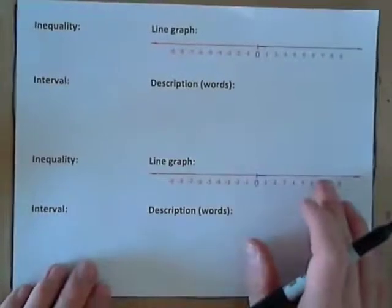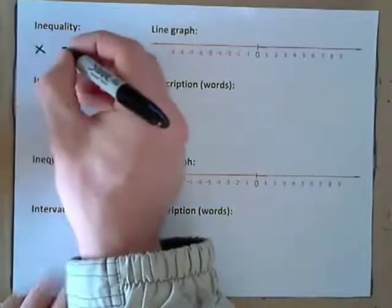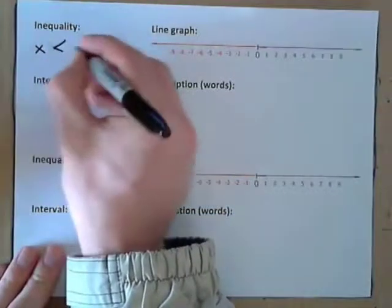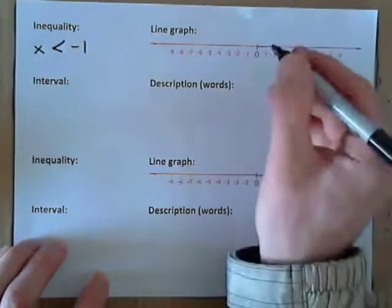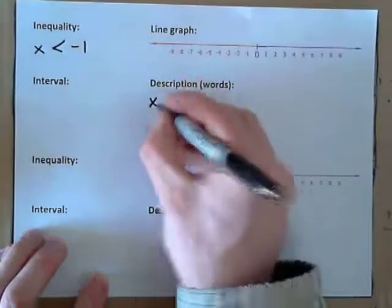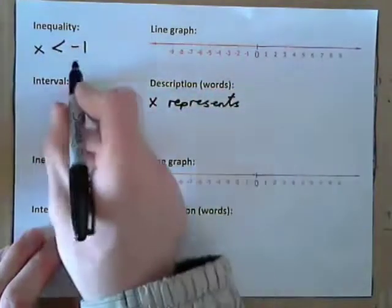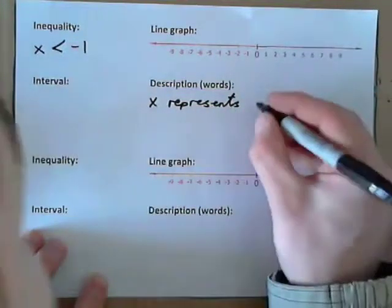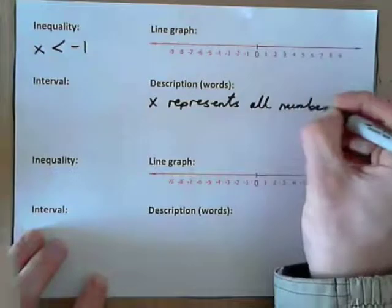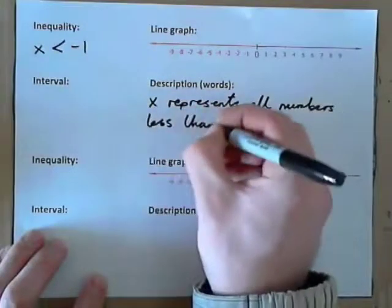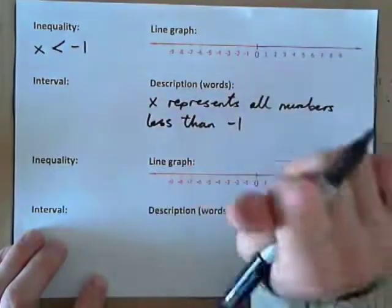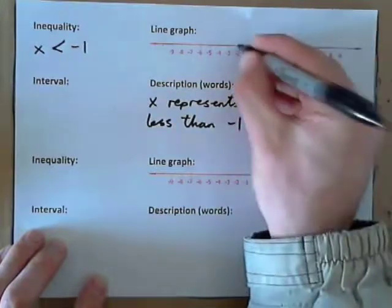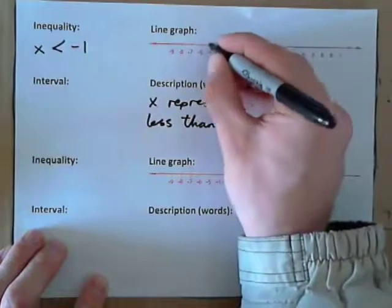We'll come back and do the interval in a minute. Let's do another one. If you had x is less than negative 1. Words: x represents not just one number, but a whole range of numbers — all numbers less than negative 1. For example, negative 2 — that's less than negative 1. Negative 3, negative 4, negative 5, negative 6 — all these.